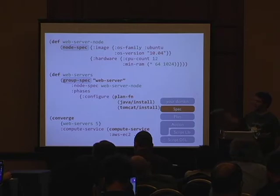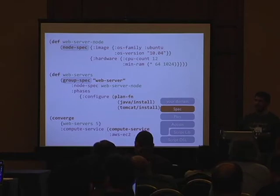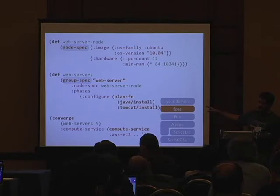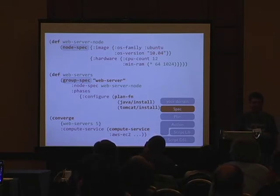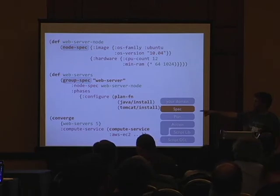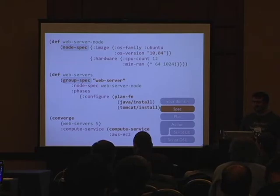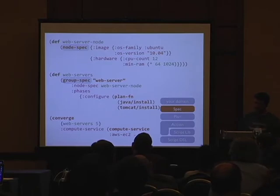This configure phase will install Java and install Tomcat. You can have more phases — one could be restart the web server, another could be install an application on the web server, and so forth. At the end of the day, this ends up being calls to plan functions, which will turn into shell scripts. Once you've defined your configuration, you call Pallet and tell it to build five of these servers on Amazon EC2. That's all you need to do.